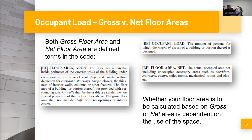Net floor area is the actual occupied area, not including unoccupied accessory areas such as corridors, stairways, ramps, toilet rooms, mechanical rooms, and closets. So the big difference is that in gross floor area you must include corridors, stairways, ramps, and closets, whereas in net floor area you do not count corridors, stairways, ramps, toilet rooms, mechanical rooms, and closets.